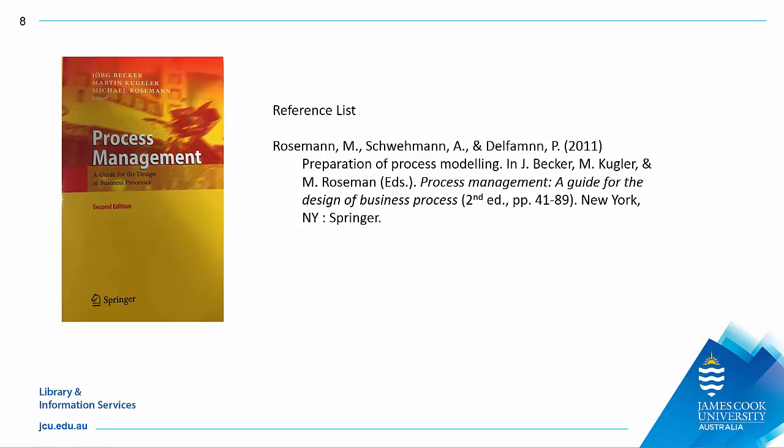Here is an example of a chapter reference as it would appear in a reference list. For author names, the first initial goes after the surname, but for editors it comes before the surname. After the editors' names, write the abbreviation 'Ed.' or 'Eds.' for editors in brackets, using a capital E as you are referring to people. The chapter title is not in italics, but the book title is in italics. Both are in sentence case. The edition goes in the same set of brackets as the page numbers. As this book was published in the US, the city is followed by the state abbreviation.